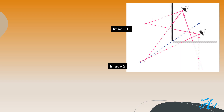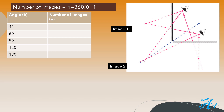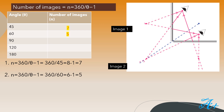Now let's see the number of images when two mirrors are placed at different angles. We have the formula: n = 360 divided by theta, minus 1, where theta is the angle at which the two mirrors are placed. For example, at 45 degrees: n = 360/45 = 8, and 8 minus 1 gives 7. So the total number of images when two mirrors are placed at a 45-degree angle is 7.